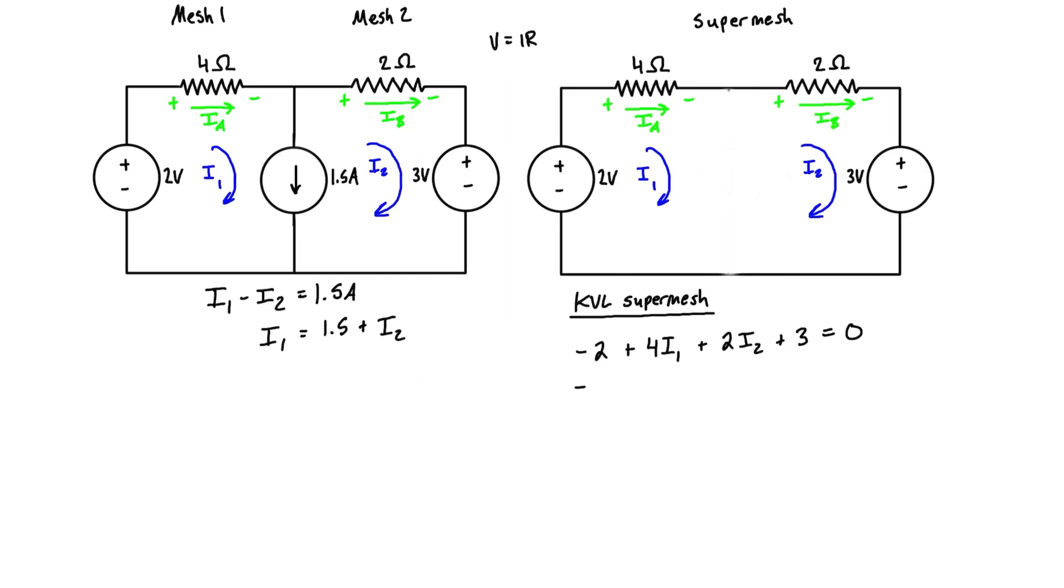All right, now we can simplify this a little bit. So we've got minus 2 plus 4 I1, and we have I1 right up here. So it's 1.5 plus I2 plus 2 I2 plus 3 is all equal to 0. We can simplify that a little bit more. So we have negative 2 plus 6 plus 4 I2 plus 2 I2 plus 3 is equal to 0.